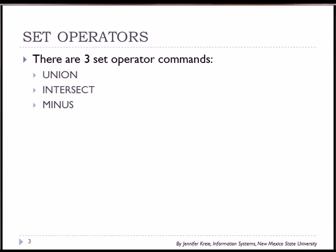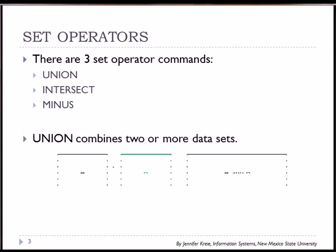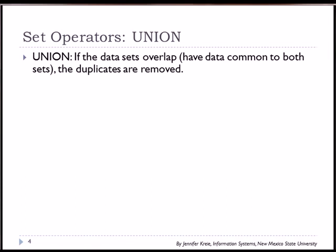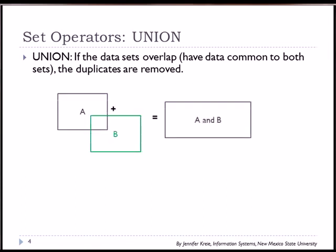The three set operators that we will use in this video are union, intersect, and minus. The union combines two or more data sets. We have an example here of data set A combined with data set B, which gives us a combined data set of A and B. In the union command, if the data sets overlap, the duplicates will be removed. So we see here in this graphic, we have data set A, we have data set B, and they have common data to both data sets. We will see this data once, but not twice, even though it's in both data sets.